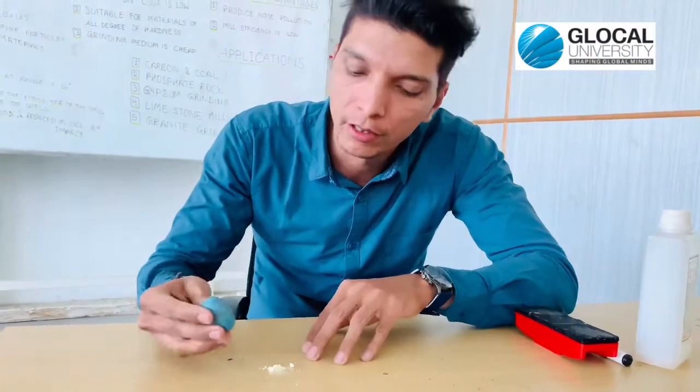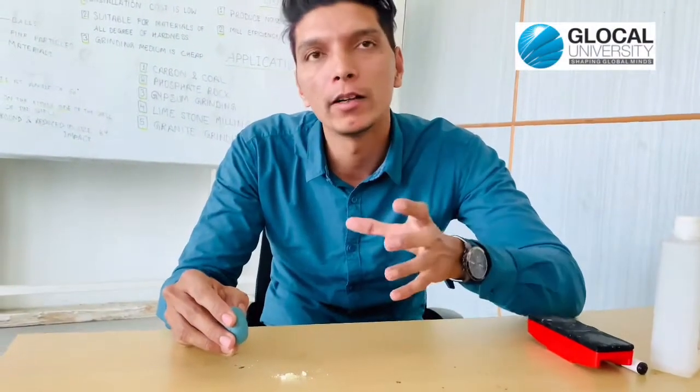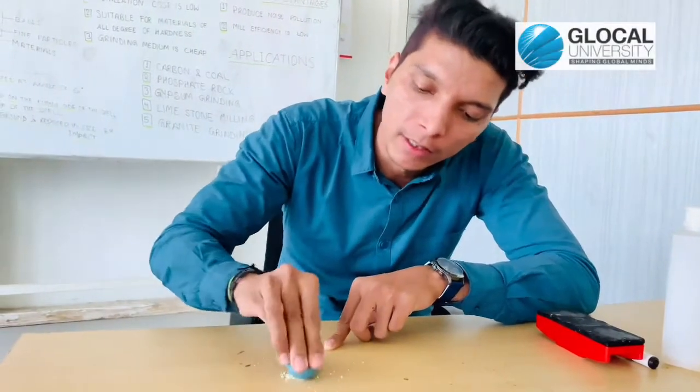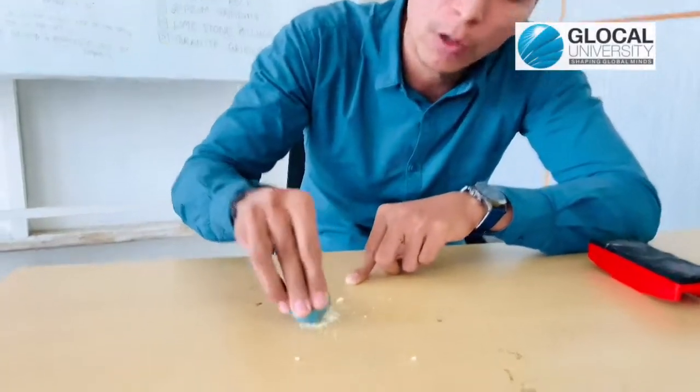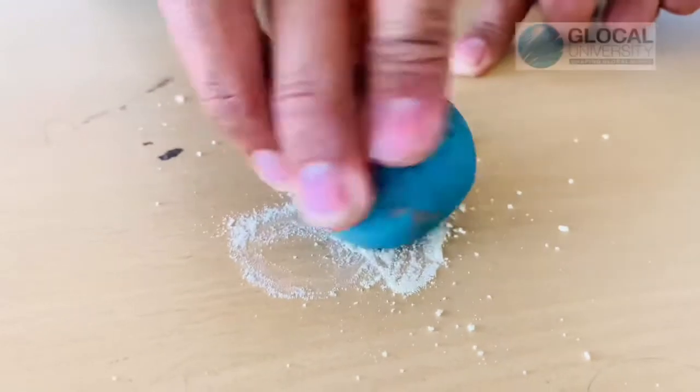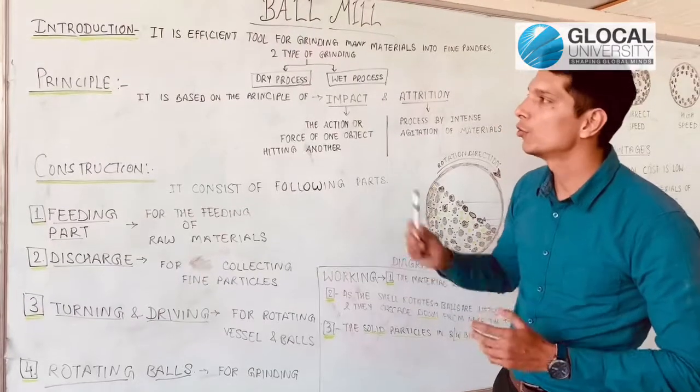Now, attrition. In attrition, basically the surface or object will move. Our object is here, so I will move this way. You can see that there is grinding and size reduction also. We are grinding by attrition.